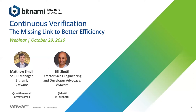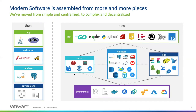Before I pass this over to Bill Shetty, I wanted to set the tone and provide context for the world we live in — our software-defined world — and where Bitnami sees things. Modern software continues to be more complex and more decentralized. Back in the early 2000s, even an open source stack was relatively vertical. There weren't a lot of sources to choose from, not many application frameworks and runtimes to select from, and choices were limited.